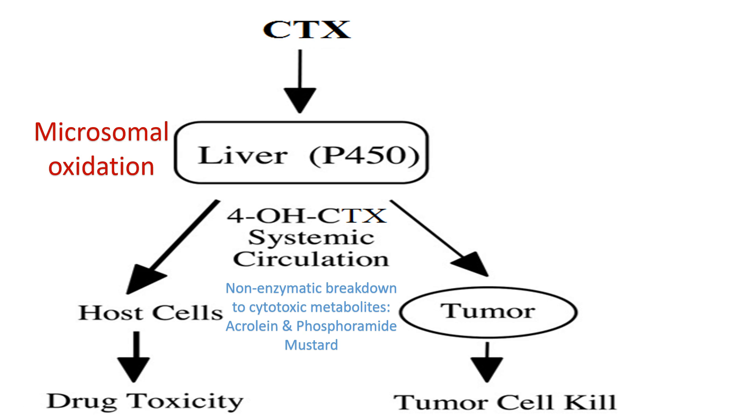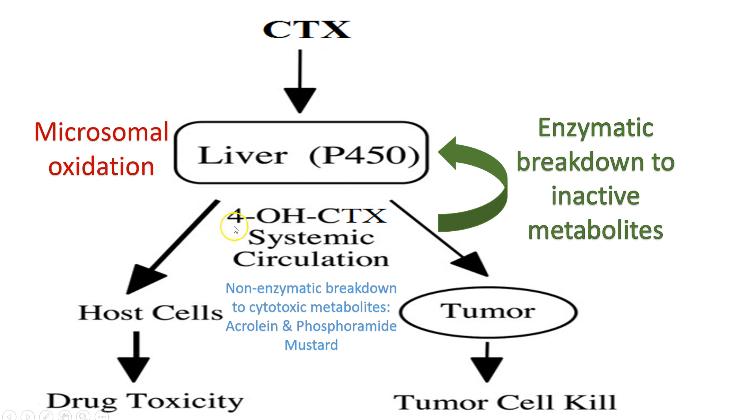The aldehyde from 4-hydroxy cyclophosphamide also makes its way back through the circulation to the liver, where it undergoes enzymatic breakdown into inactive metabolites and is excreted.